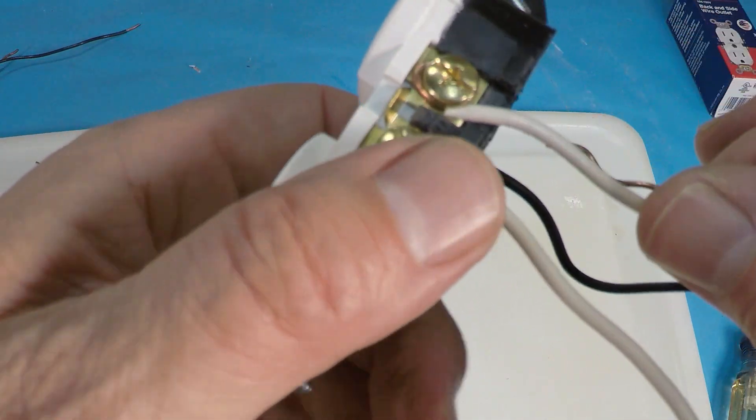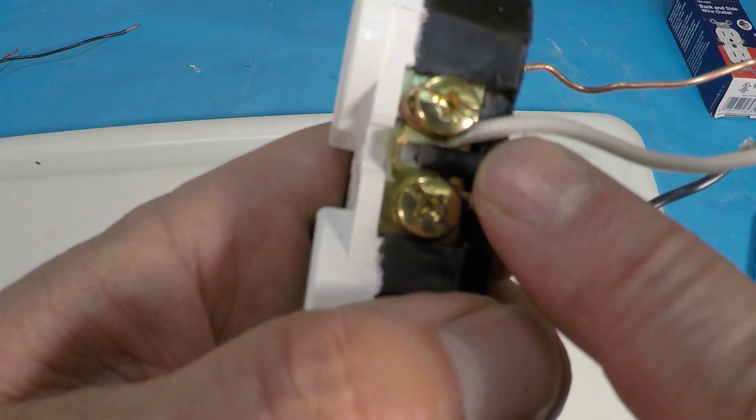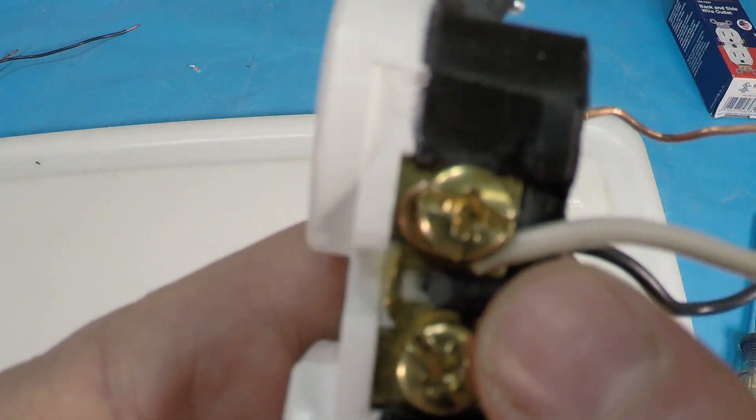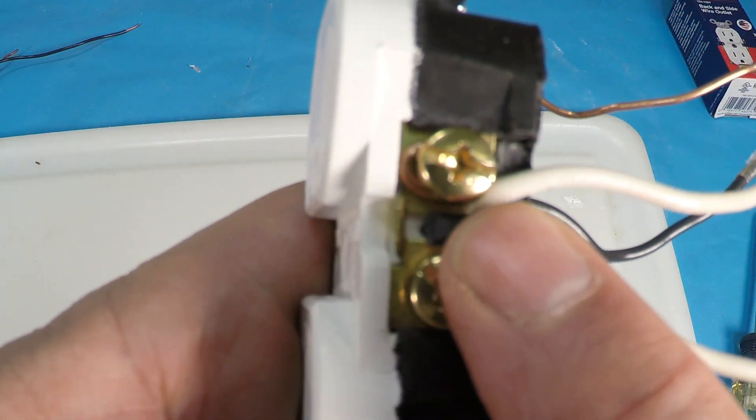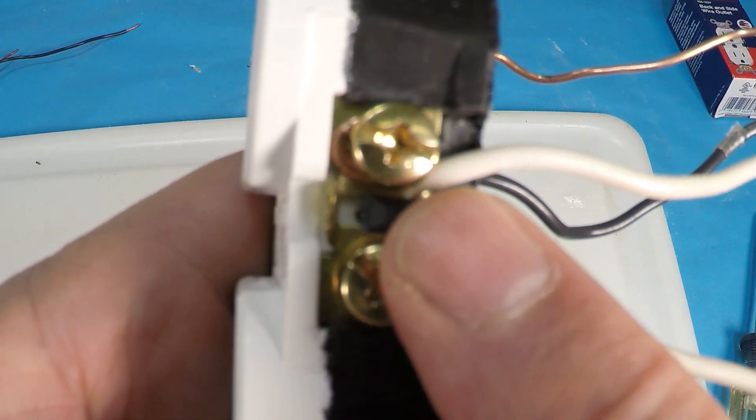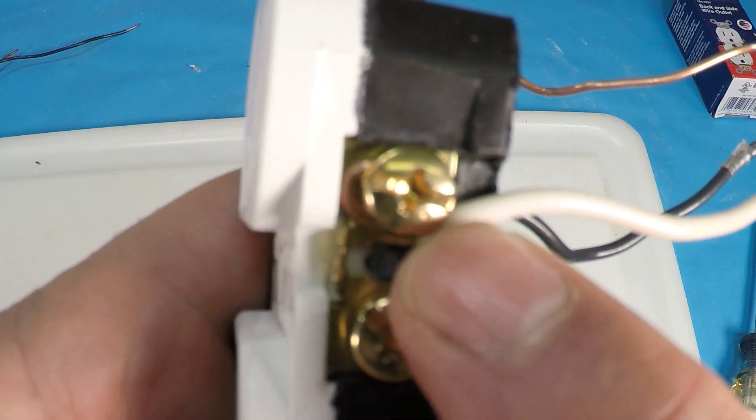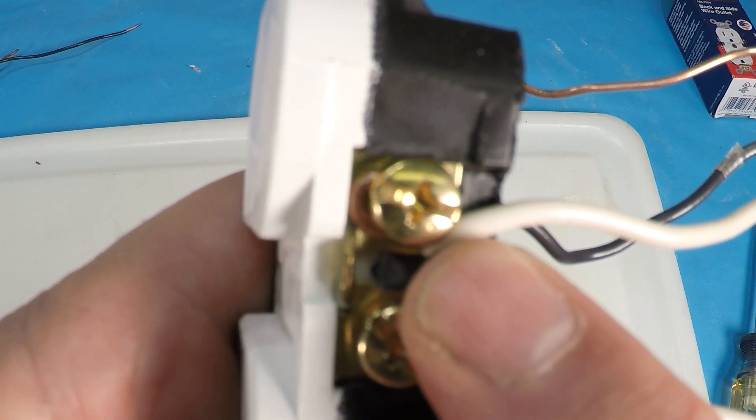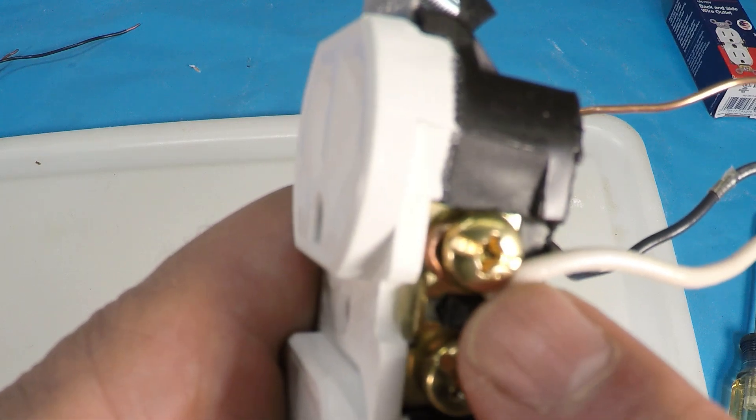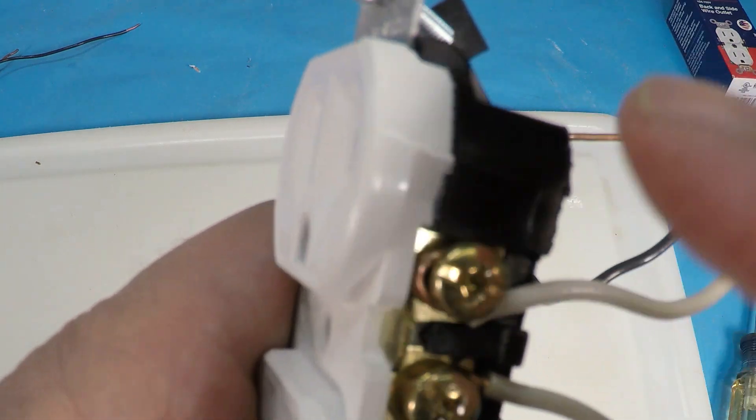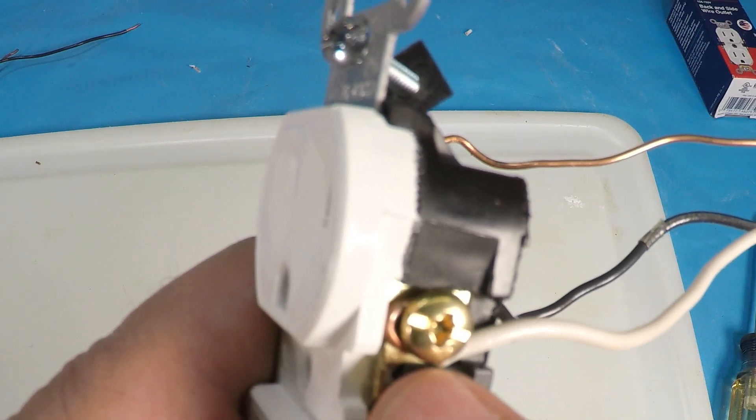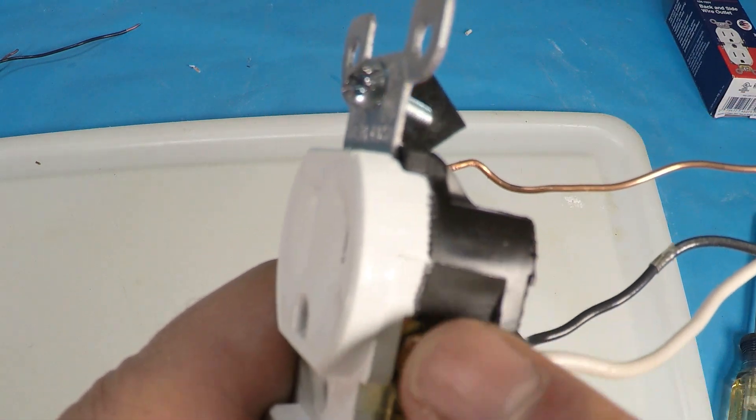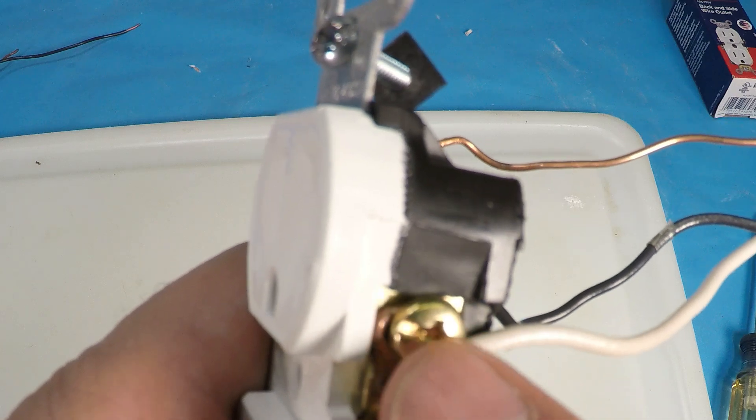The second mistake would be having too short of a J hook and now you've got the insulation pinched up underneath the screw here. When you do that, the screw is really putting its pressure on the insulation and not the wire. So you could create a little gap in there which would also create an arc. And if you get an arc, you've got extreme heat and that's how you start melting the outlet and potentially cause a fire.